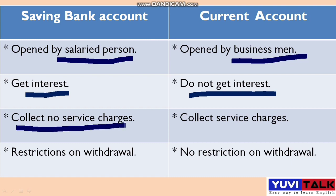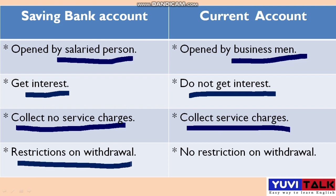The third difference is that a Saving Bank Account does not collect service charges, while a Current Account has service charges collected by the bank. The fourth difference is that a Saving Bank Account has restrictions on withdrawal — like a limited number of times daily or monthly — while a Current Account has no restriction on withdrawal because service charges are already collected.